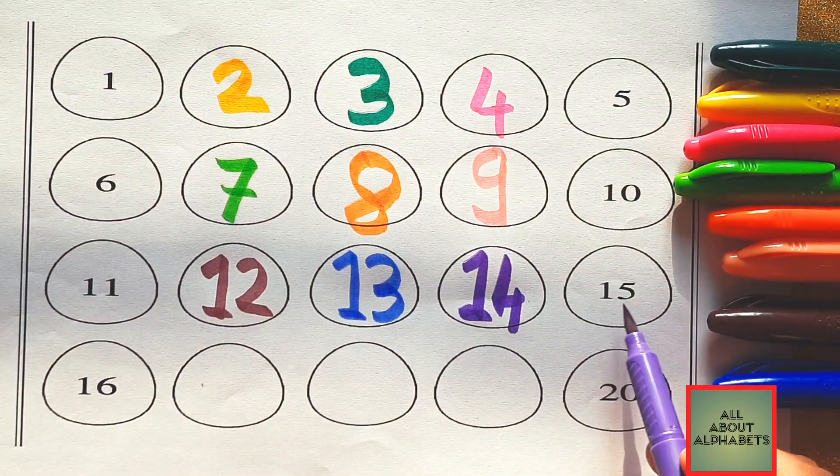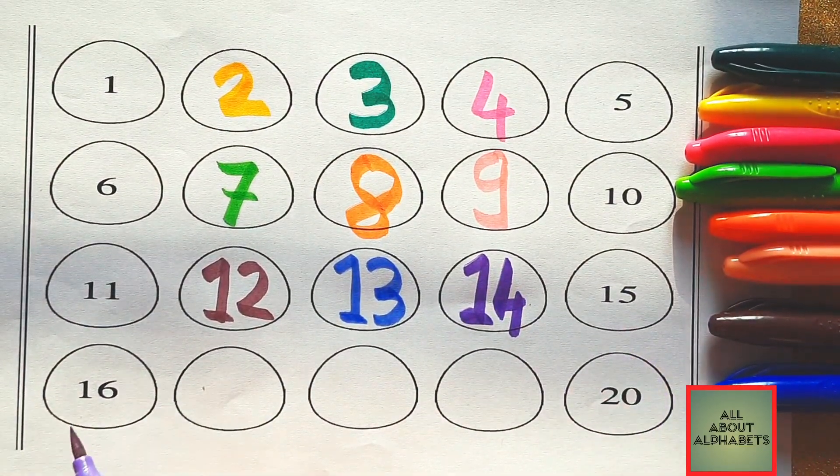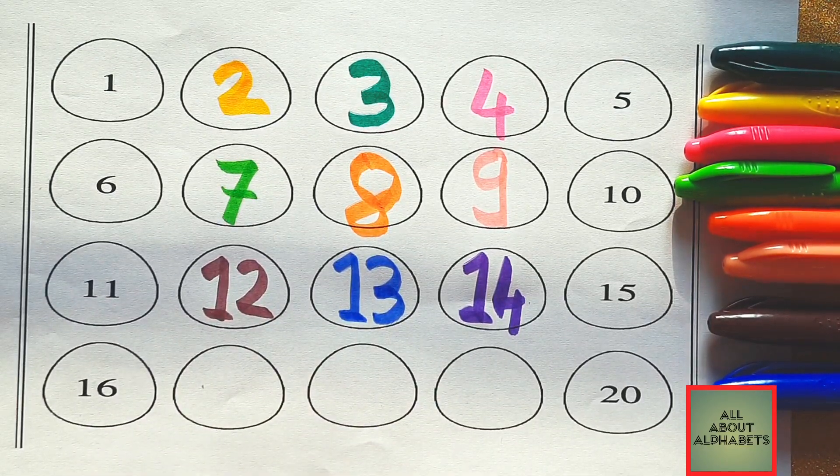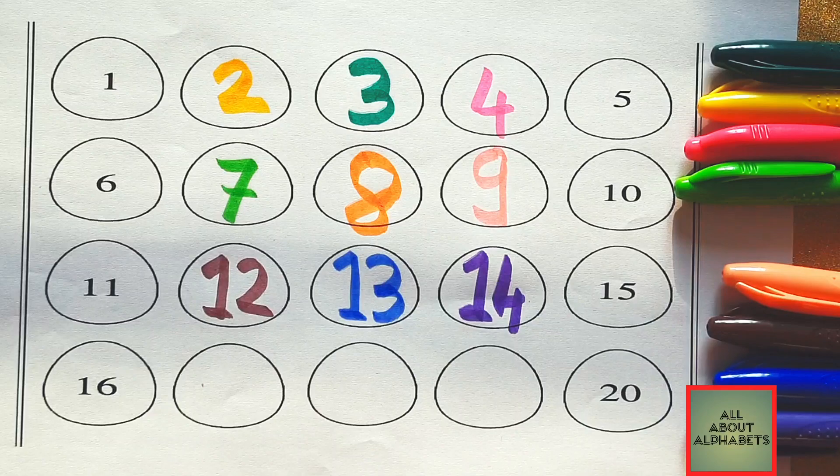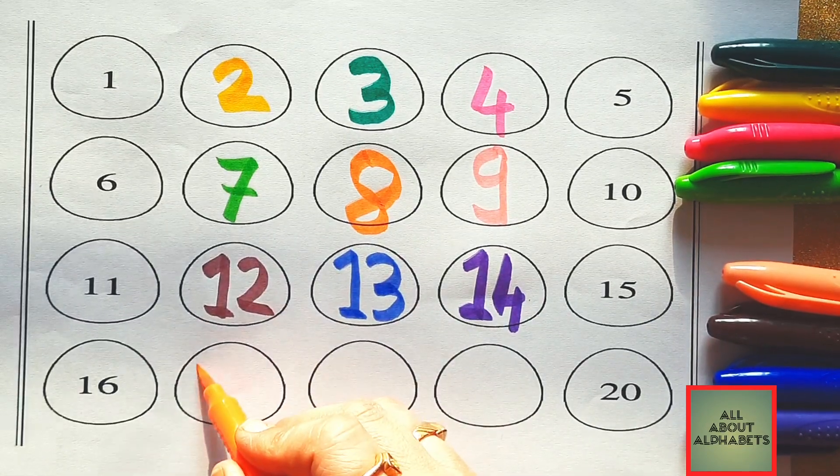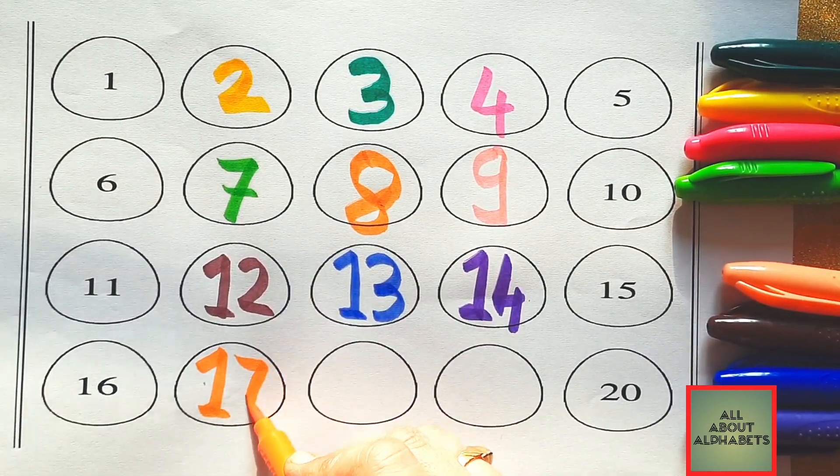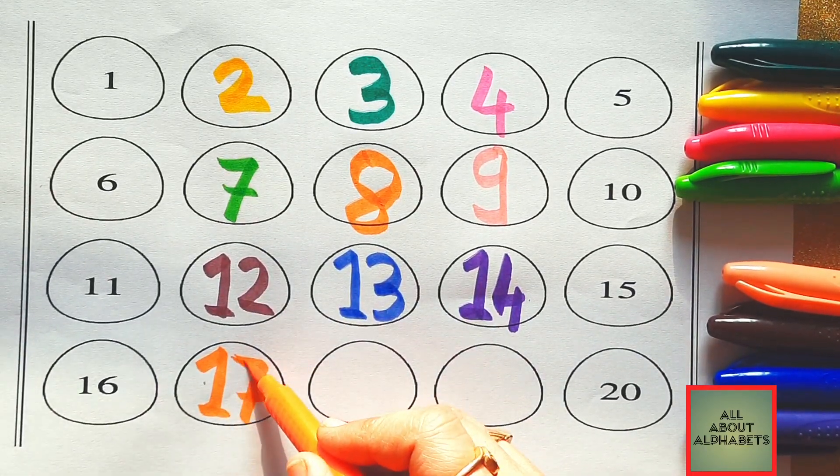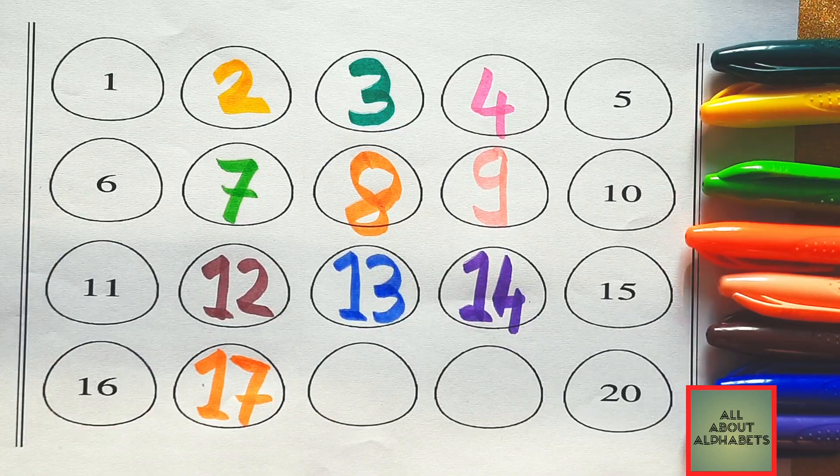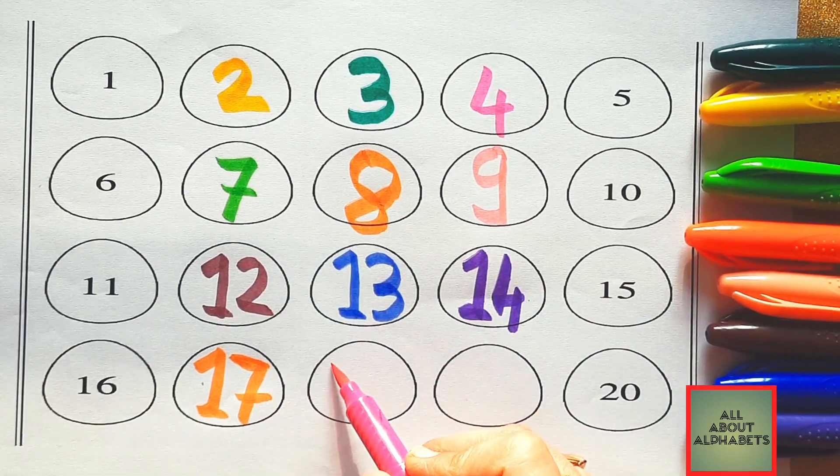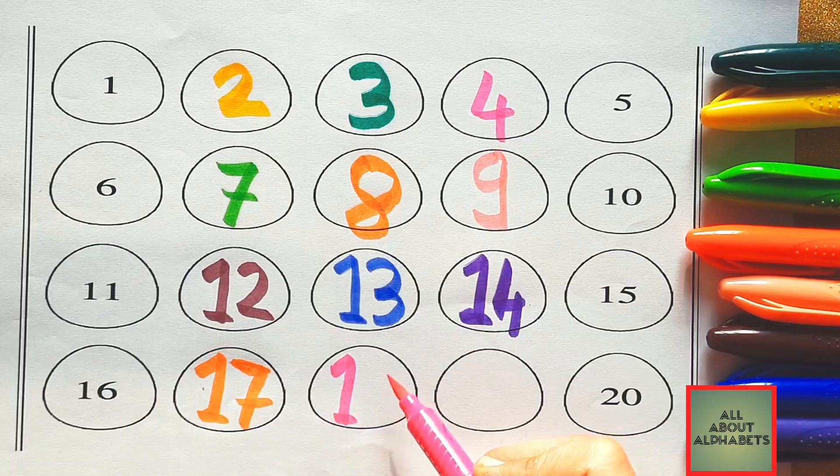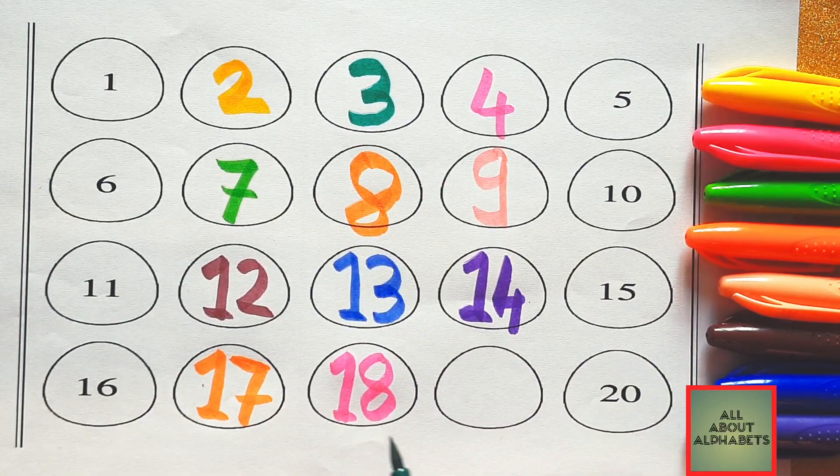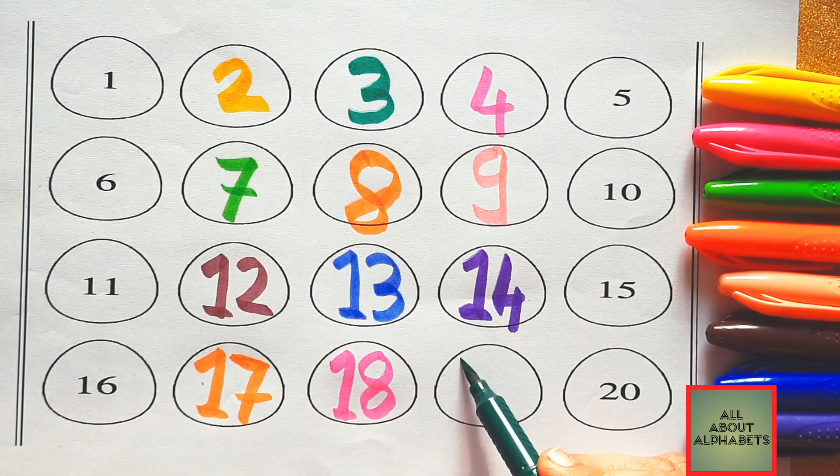Next is 15. 1, 5, 15. 1, 6, 16. Which number comes after 16? Yes! 17. 1, 7, 17. 1, 7, 17. 1, 7, 17. Yes!